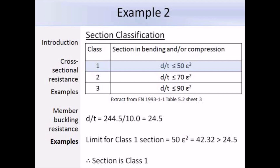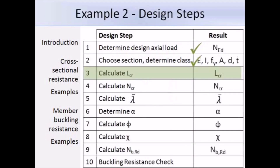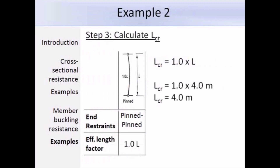The next step is to calculate the effective buckling length LCR. Both ends are pinned, so the effective length factor is 1. Therefore the effective length is the column length times 1, which is 4 metres.